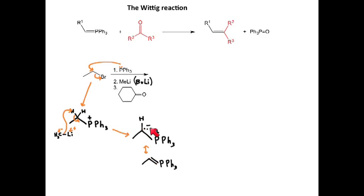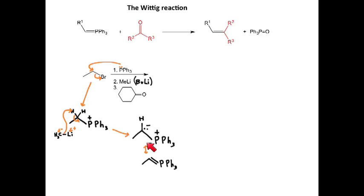This is the product we get after step two. Triphenylphosphine substitutes the bromine via SN2, and methyl lithium as a very strong base deprotonates the hydrogen to generate our phosphonium ylid. Now in step three, we have our carbonyl — here we have a ketone — so let's continue with the mechanism.